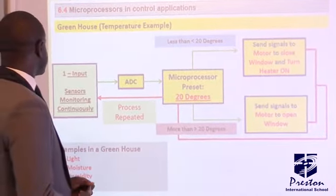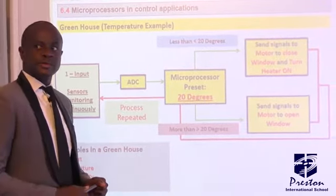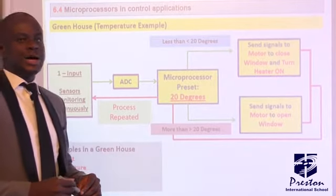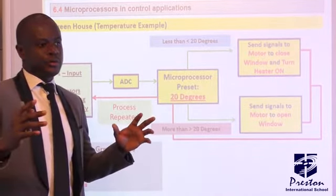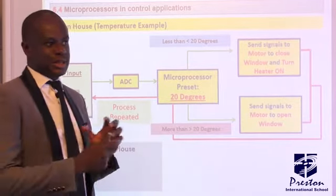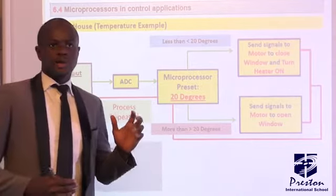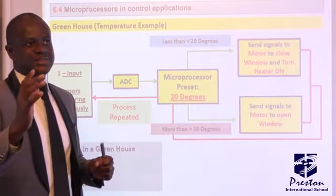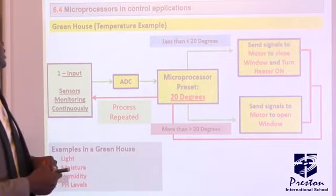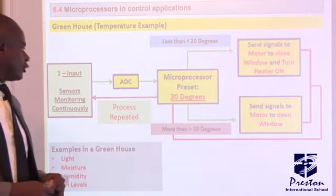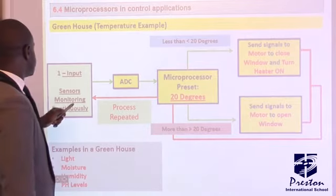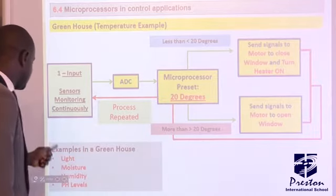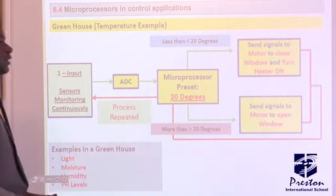Let's look at a greenhouse. A greenhouse is an environment that has been regulated to allow certain conditions to remain constant — for example, constant temperature, constant humidity, and a constant source or intensity of light — so that plants can grow accordingly. The inputs will be sensors continuously monitoring the light, moisture, humidity, and pH levels in that environment.